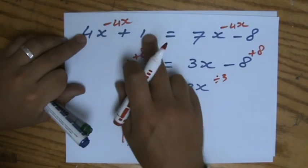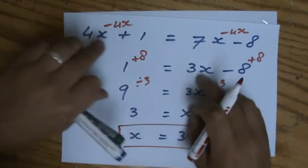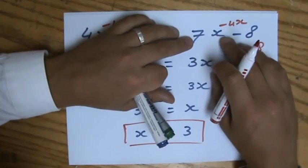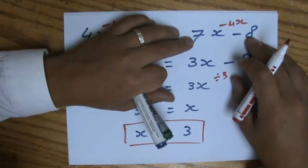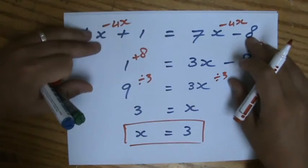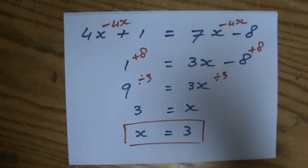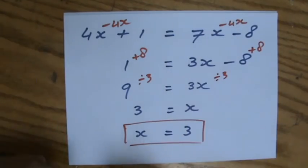Very quickly. 3. 4 times 3 is 12. Plus 1. 13. I'm going to remember that. 7 times 3. 21. Minus 8. 12. Plus 1. 13 as well. 13 equals 13. That is a mathematical truth. Fantastic.